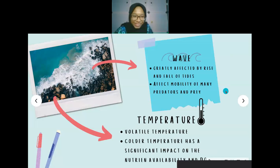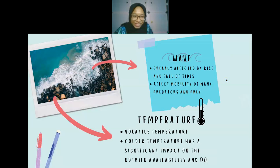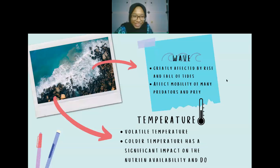The abiotic factors affecting Rocky Shore organisms include waves and tides. Since Rocky Shore areas are near the shore, they are greatly affected by the rise and fall of tides. This affects the mobility of many predators and prey — because the tidal forces are so strong, most animals cannot move freely as they might in open sea.